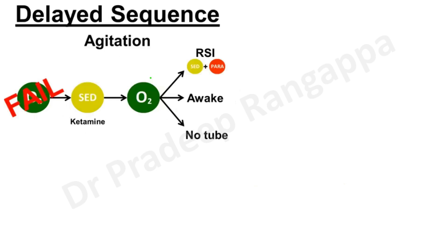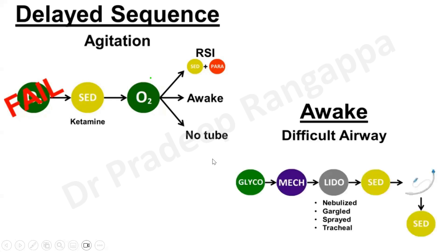If these two cannot be adopted — where pre-oxygenation or ventilating the patient is a problem — then we give sedation with ketamine, adequately oxygenate, and then adopt either rapid sequence induction, awake intubation, or supraglottic airway. This situation is adopted when there is difficulty ventilating and you want the patient awake and breathing, not fully paralyzed. This is delayed sequence intubation.